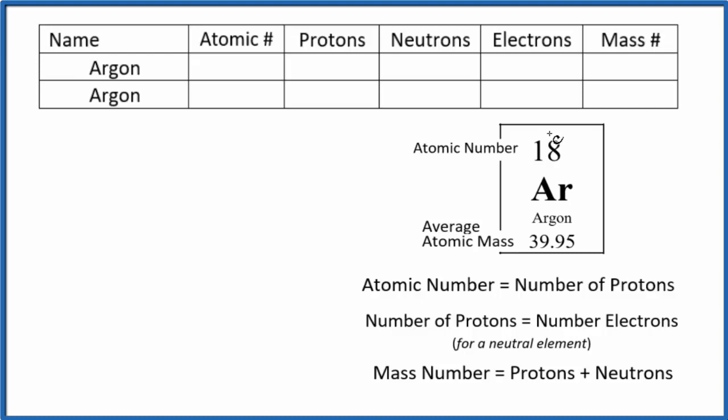There's information that'll be the same for all isotopes of argon. For example, the atomic number. For argon, the atomic number is 18, and it doesn't matter which isotope you have. Atomic number defines what the element is, and the atomic number equals the number of protons, so we have 18 protons.